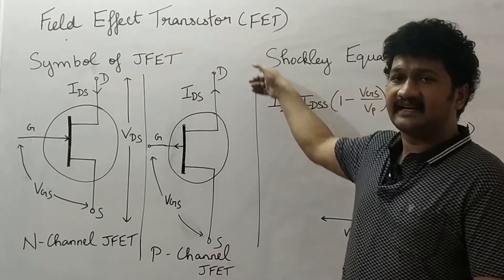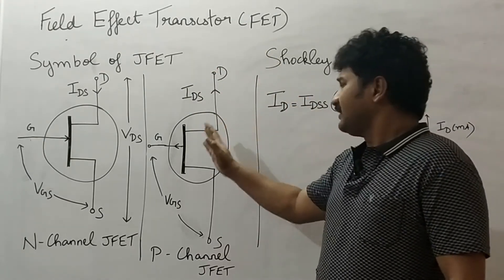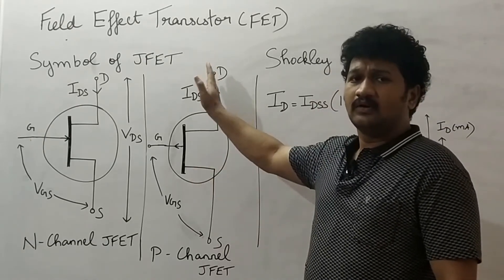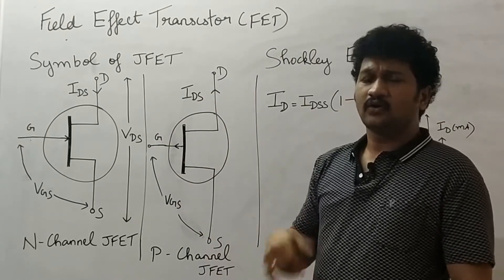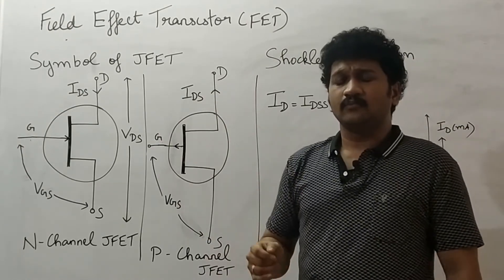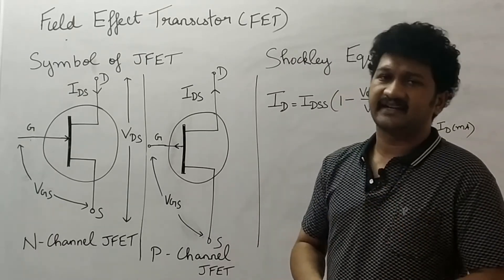When holes move towards the drain to source negative terminal, current also moves in that direction. Current moves in the same direction as holes and opposite to the direction of electrons.